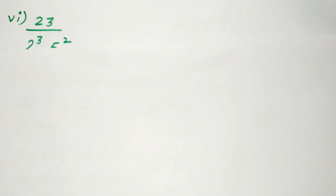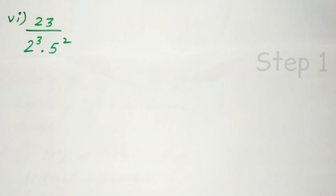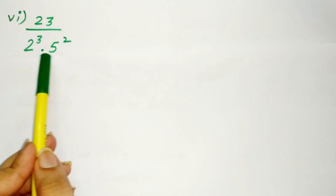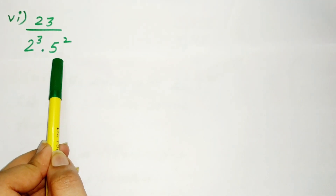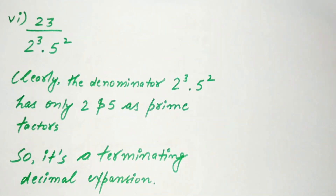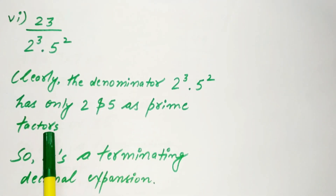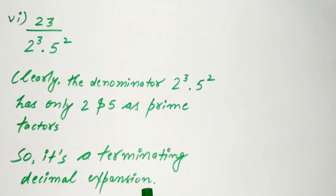The sixth part is 23 divided by 2 raised to the power 3 multiplied by 5 squared. Since the denominator has only 2 and 5 as prime factors, it's a terminating decimal expansion. Write down: denominator has only 2 and 5 as prime factors, so it's a terminating decimal expansion.